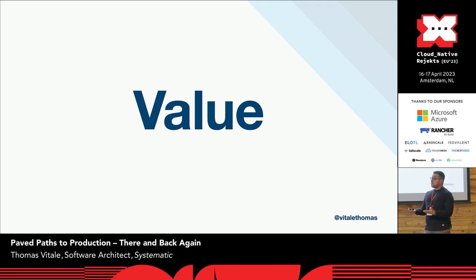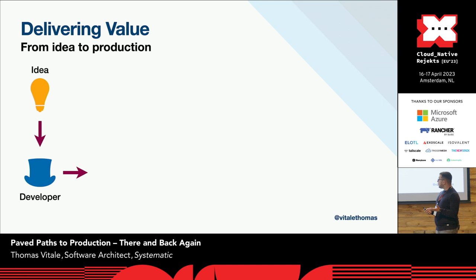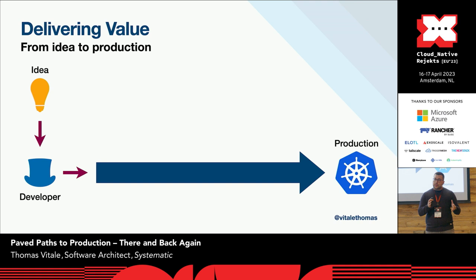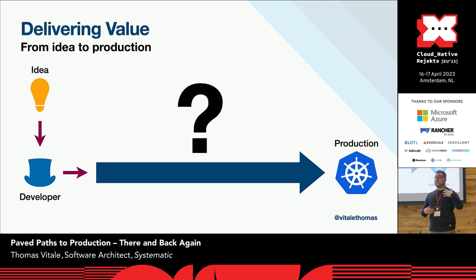The way that we deliver value — the way that we go from the initial idea to production — really matters. We start with the idea, at some point we involve a development team, and we go through this path to production, which in our case would be Kubernetes. The way that we get there is really important in order to ensure we get there as quickly as possible, but also in a safe and secure way. Because until we reach production, our software is useless. It's only when it's running in production that it actually delivers value.